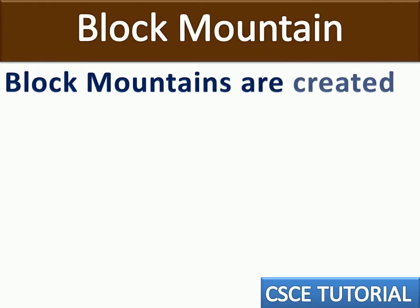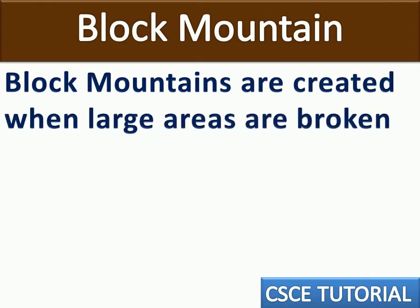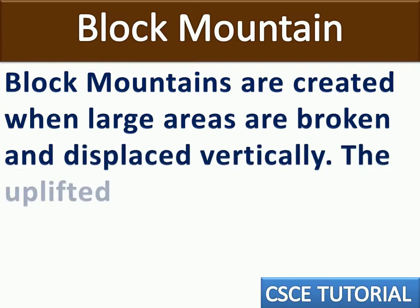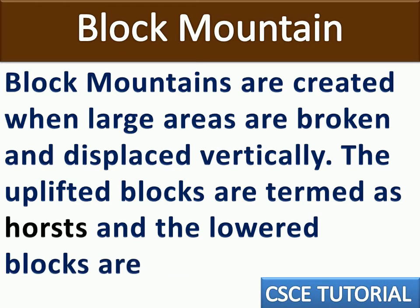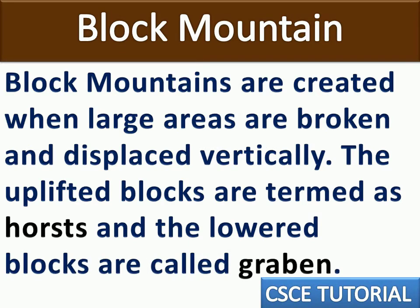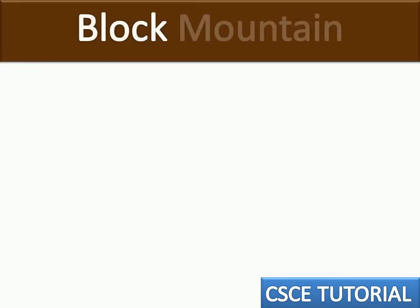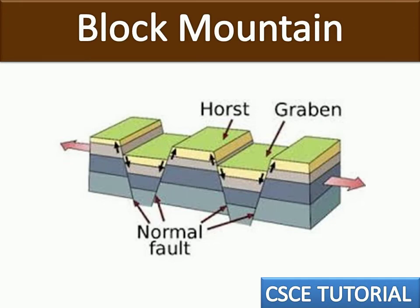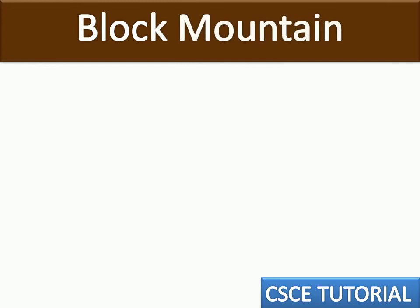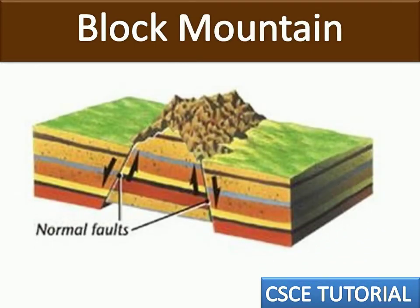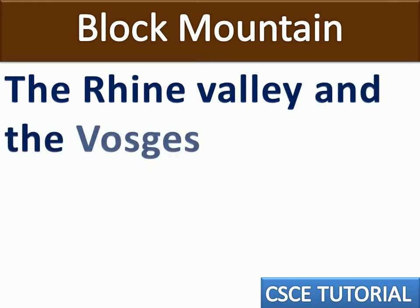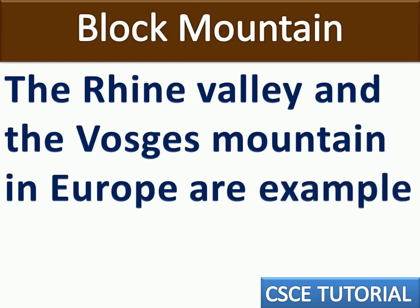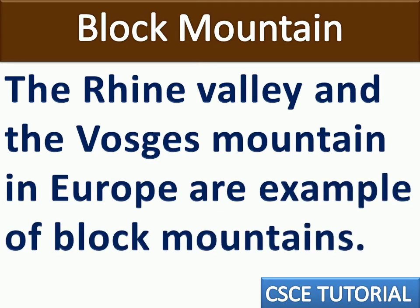Block mountains are created when large areas are broken and displaced vertically. The uplifted blocks are termed as horst and the lowered blocks are called graben. The Rhine Valley and the Vosges mountains in Europe are examples of block mountains.